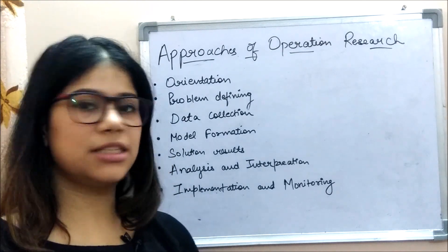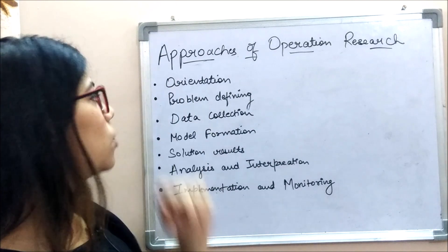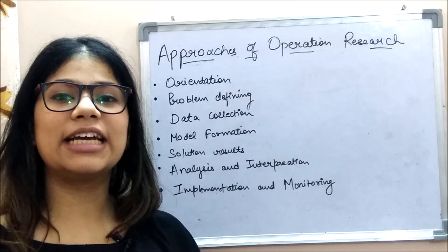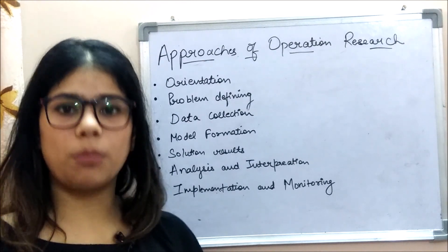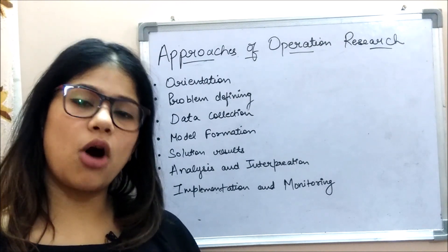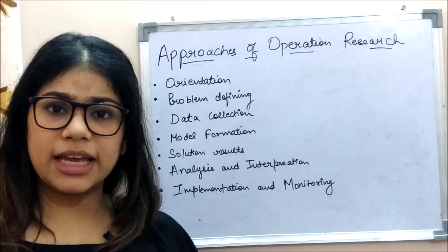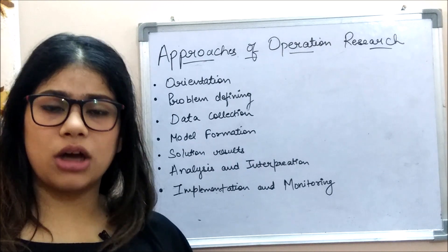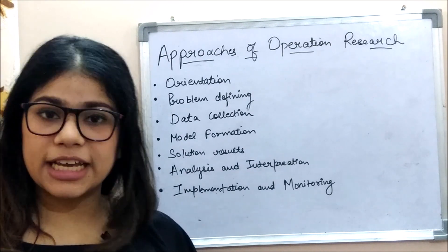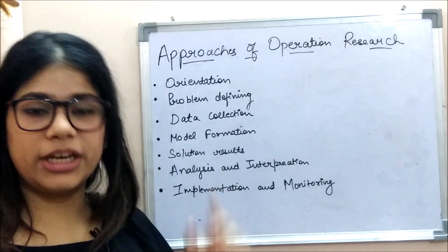Next topic is the approaches of Operation Research. The first step is orientation. In orientation, we take a clear picture of the organization — we look at relationships, activities, issues, ledgers, documents, and literature to understand the situation.